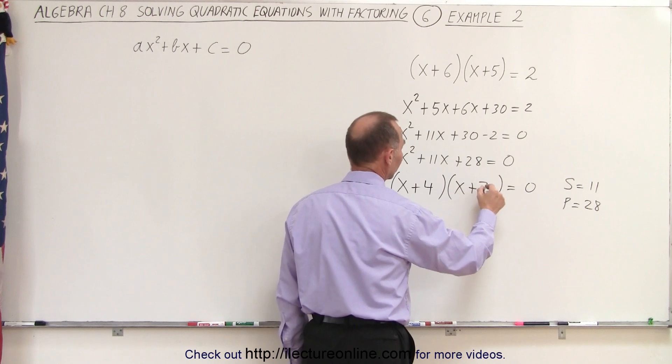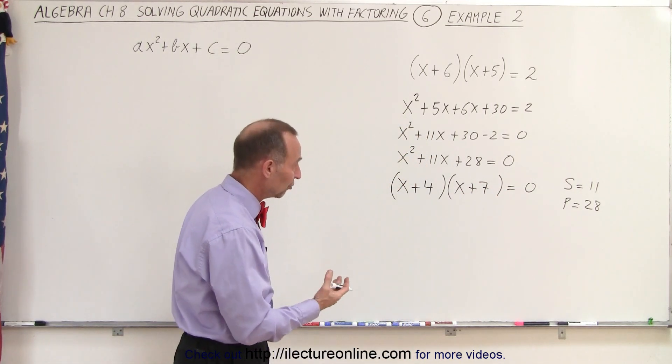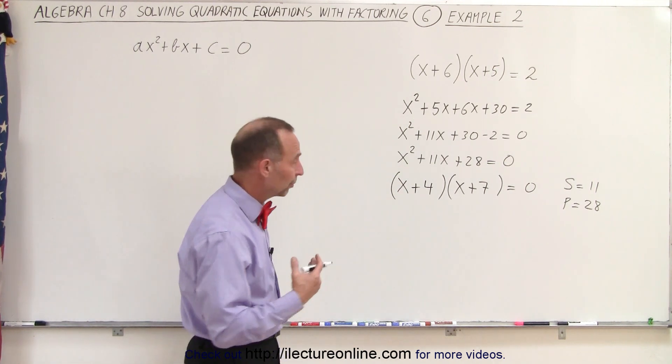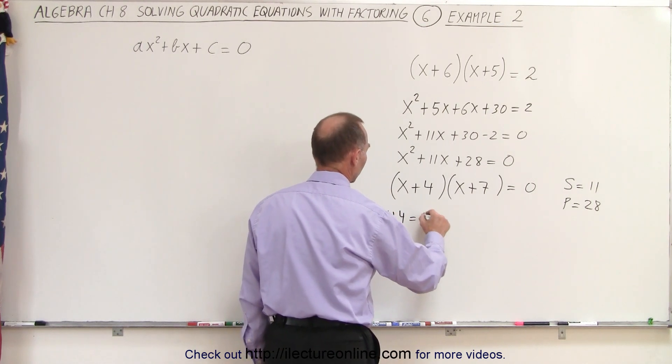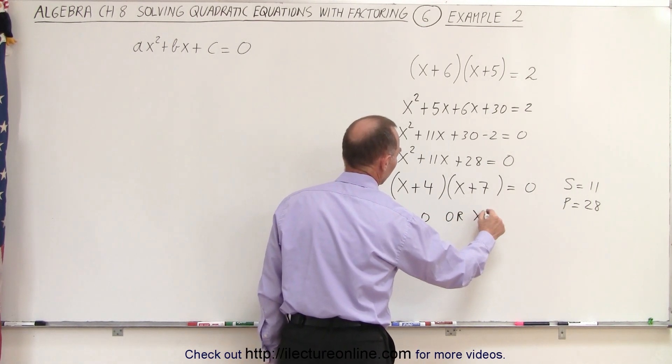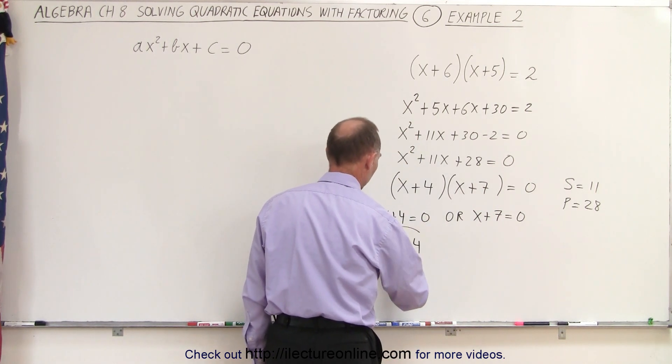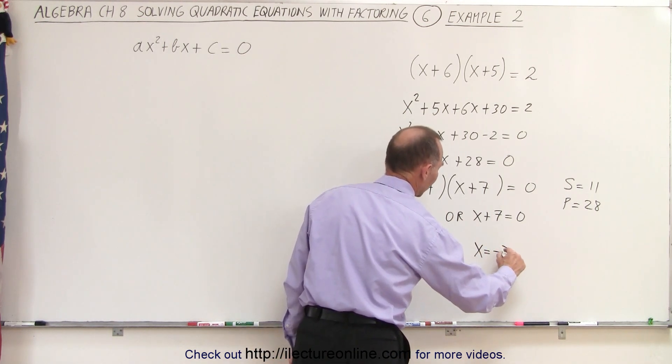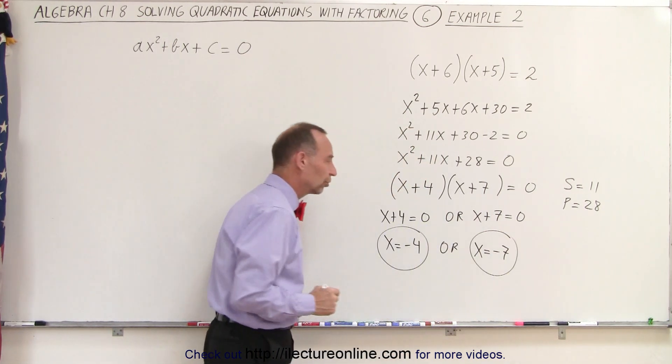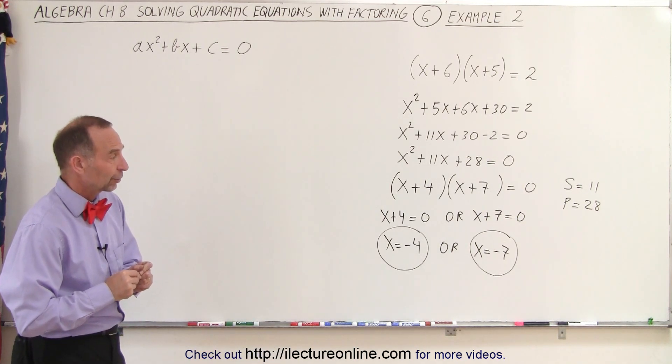Now that it's in this form, we can use the property of multiplication, that if you multiply two numbers, you get 0, one or the other must be equal to 0, which means that x plus 4 must equal 0 or x plus 7 must equal 0. Which means that x equals negative 4 as one of the solutions or x equals negative 7 as the other solution. And that's how you get the solution to that particular quadratic equation.